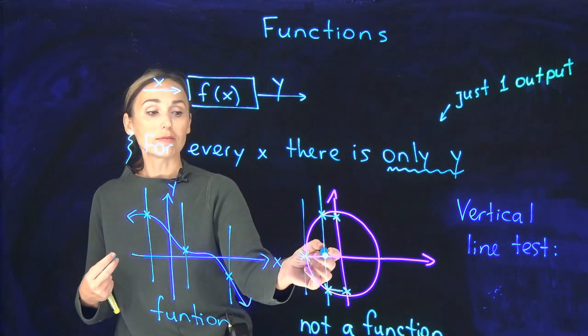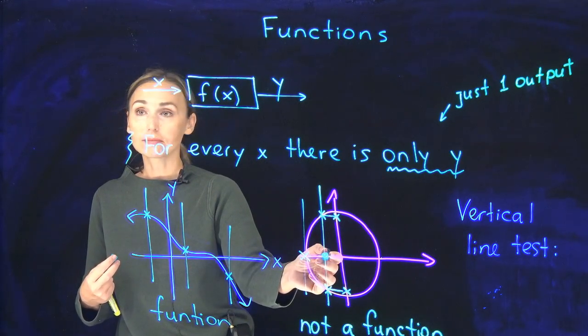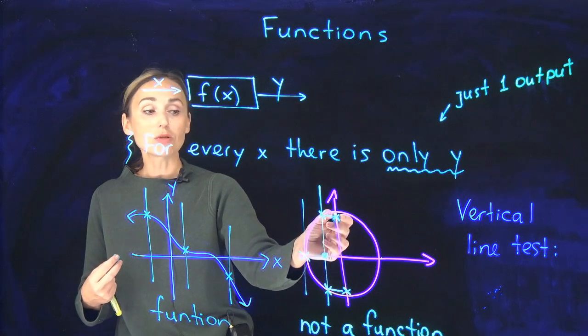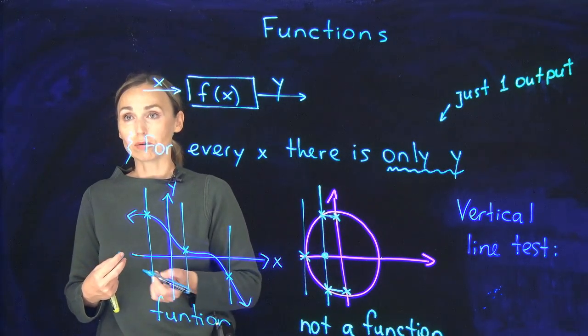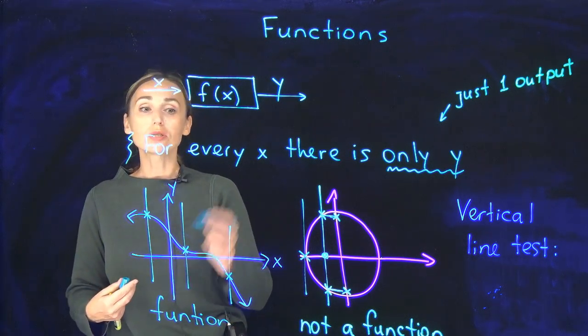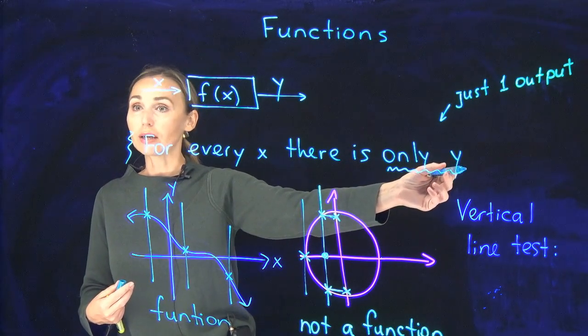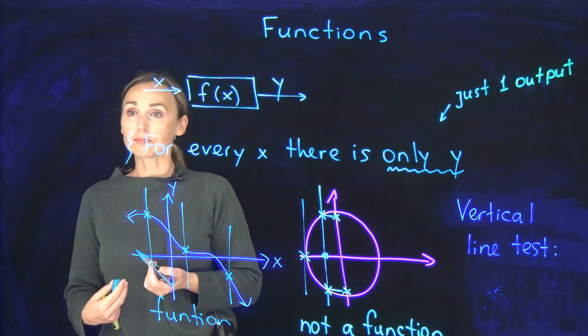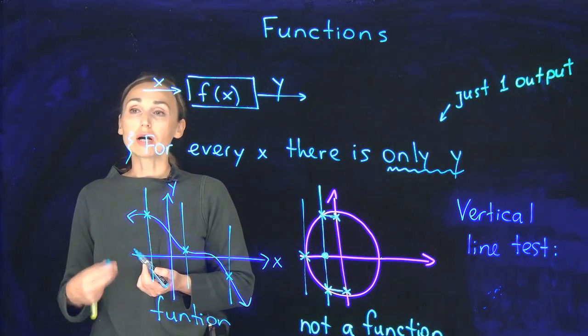They mean that, for example, for this x we have this y value and we have that y value. So for one input you have two outputs. That means that it's not a function anymore based on the definition.